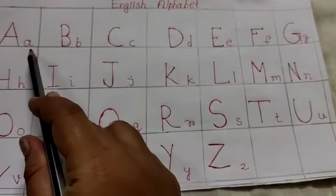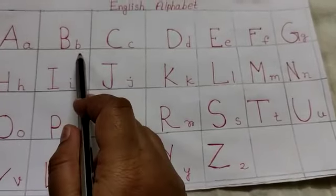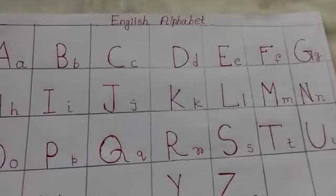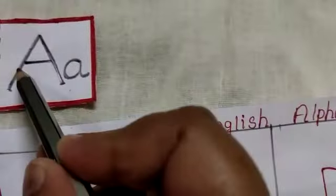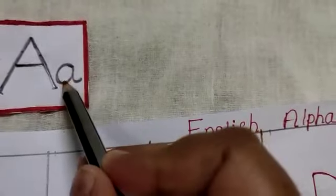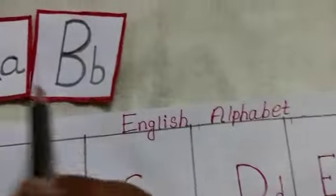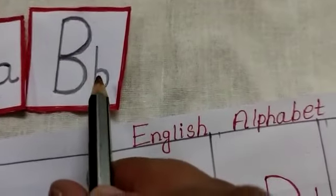These are small letters. Look like this. Capital A, small a. Capital B, small b.